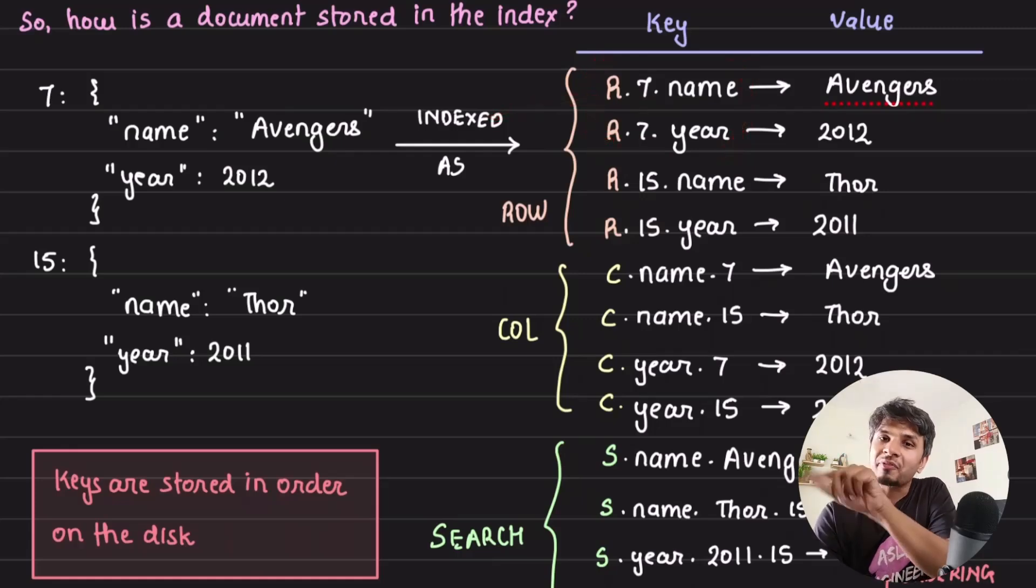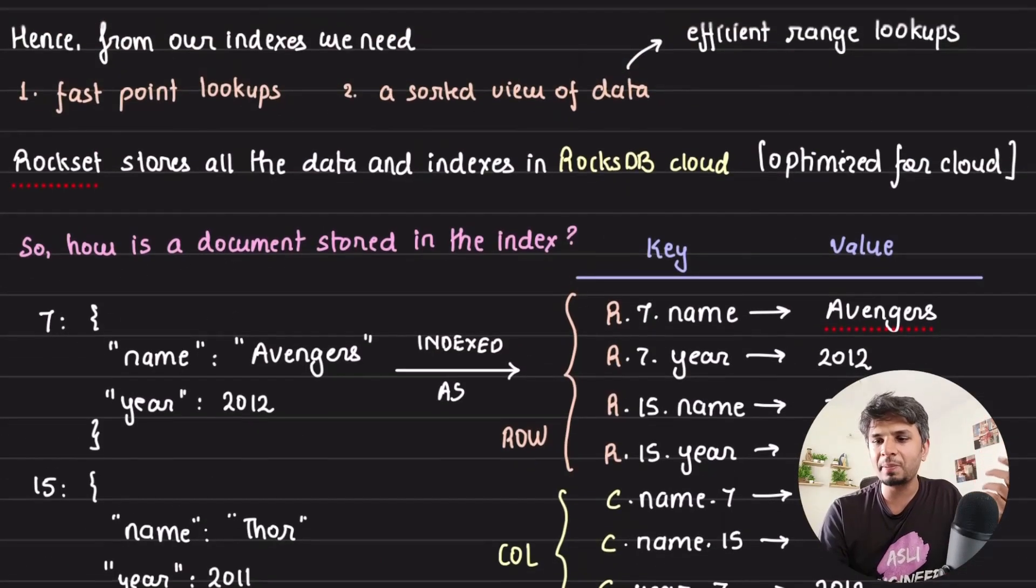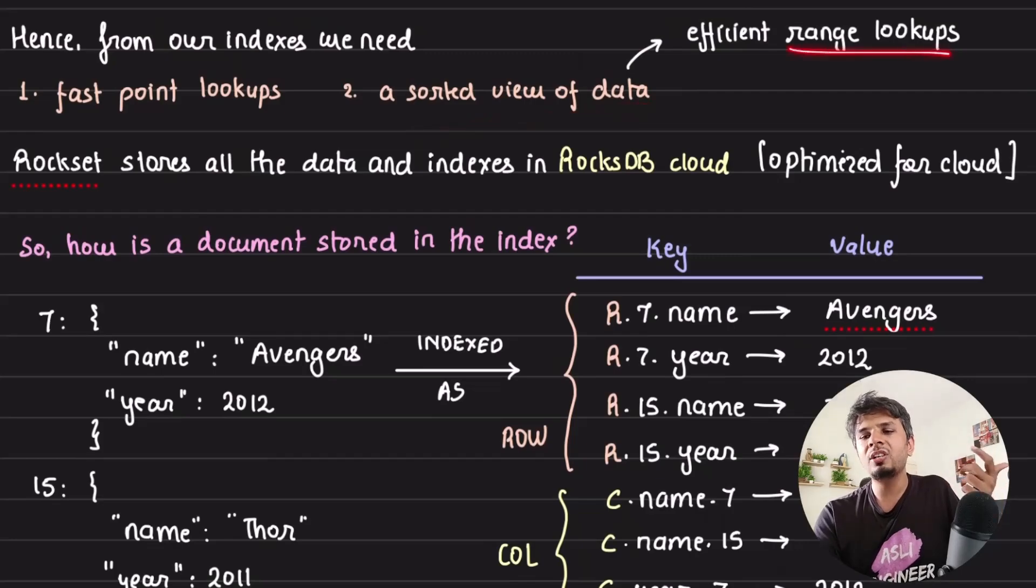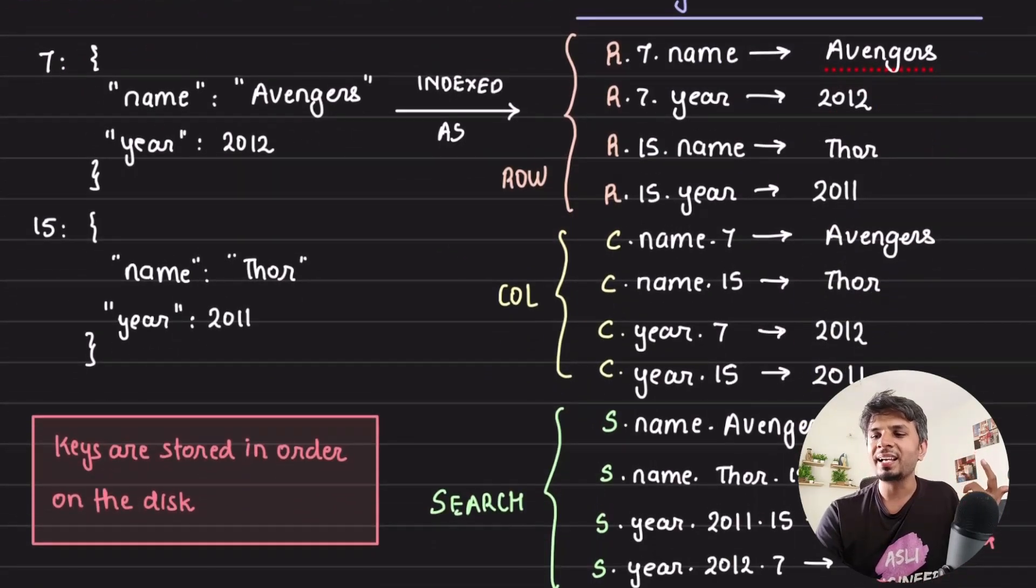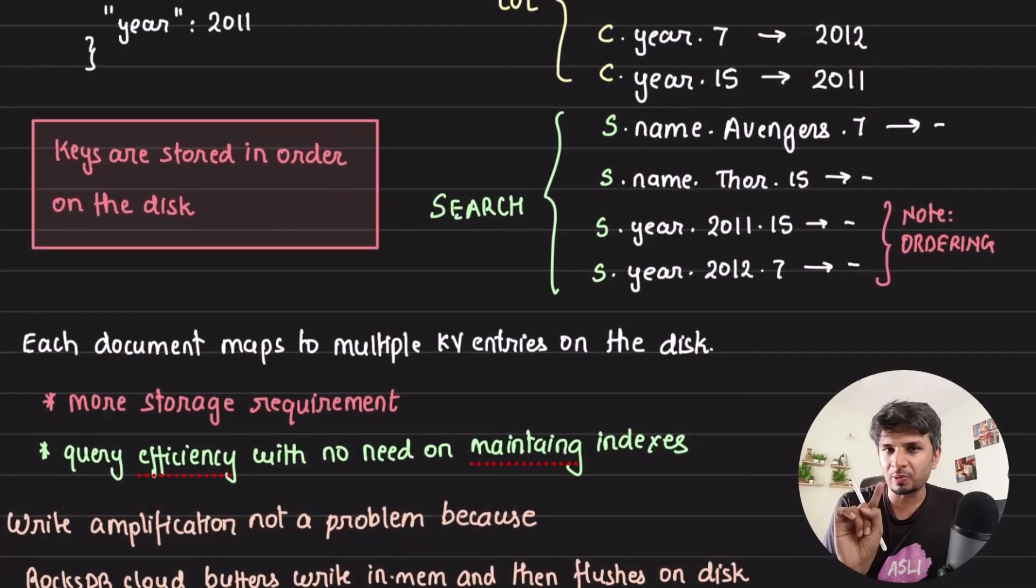This makes your row-based lookup efficient. When you say given an ID 7, give me the entire document, it does a lookup R.7.star. It gets range queries because RocksDB is optimized for range lookups. It gets that, constructs the JSON document, responds back to the user. Similarly for column, we'll go through the queries and see how it is efficient. But that's how it stores it. Give me a couple of minutes to touch upon something and then we'll come back to execution.